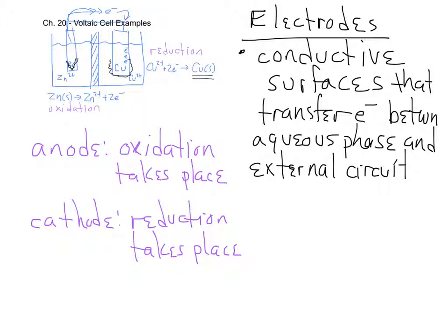You want a mnemonic device to help you remember which is the anode and which is the cathode, and where oxidation and reduction take place. One way is to remember that anode and oxidation both start with vowels — so they go together, and oxidation takes place at the anode. The C in cathode and the R in reduction are both consonants, so cathode and reduction go together. So: anode = oxidation, cathode = reduction. In the voltaic cell we drew, the zinc metal would be the anode, and the copper metal would be the cathode.